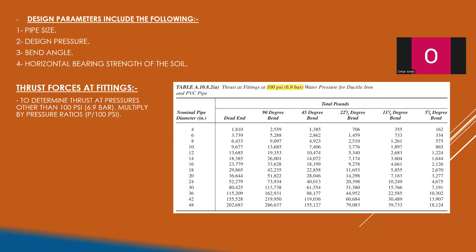The main parameters to prepare or implement a design for a thrust block are: first, the pipe size; second, the design pressure; third, the bend angle; and fourth, the horizontal bearing strength of the soil. These are the four main parameters. As the bend angle increases, the thrust force will be higher.